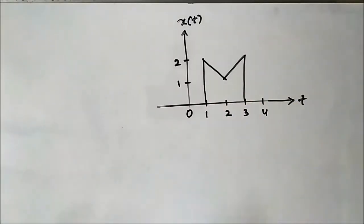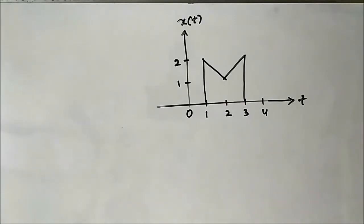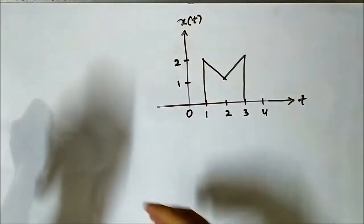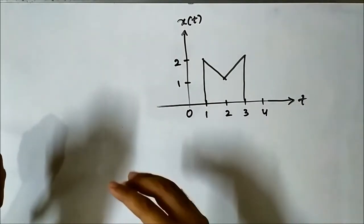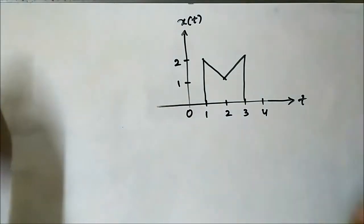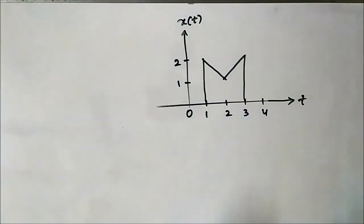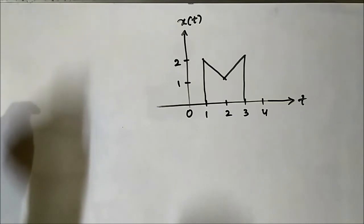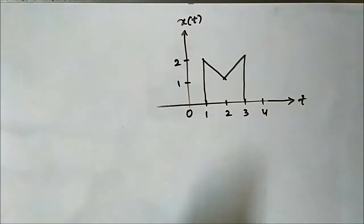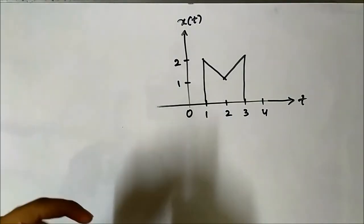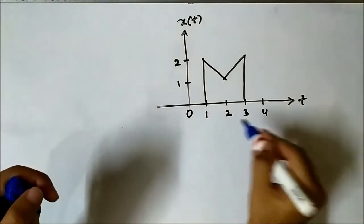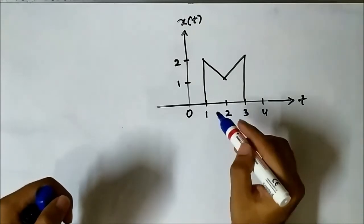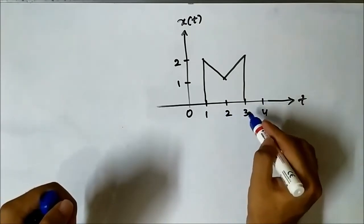Now let us perform the time reversal operation on some random signals. Here we have a signal x(t) and we have to perform the time reversal operation. For direct implementation, we have to pick the starting and ending points of the signal. Here the starting point is 1 and the ending point is 3 — the signal starts from 1 and ends at 3.